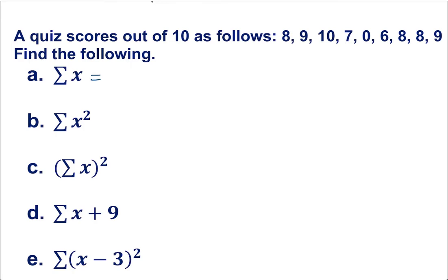So let's do this: add all of them together. 8 plus 9 plus 10 plus 7 plus 0 plus 6 plus 8 plus 8 plus 9, and that is going to give you 65. You add all of them, it should give you 65. That's it, 65.